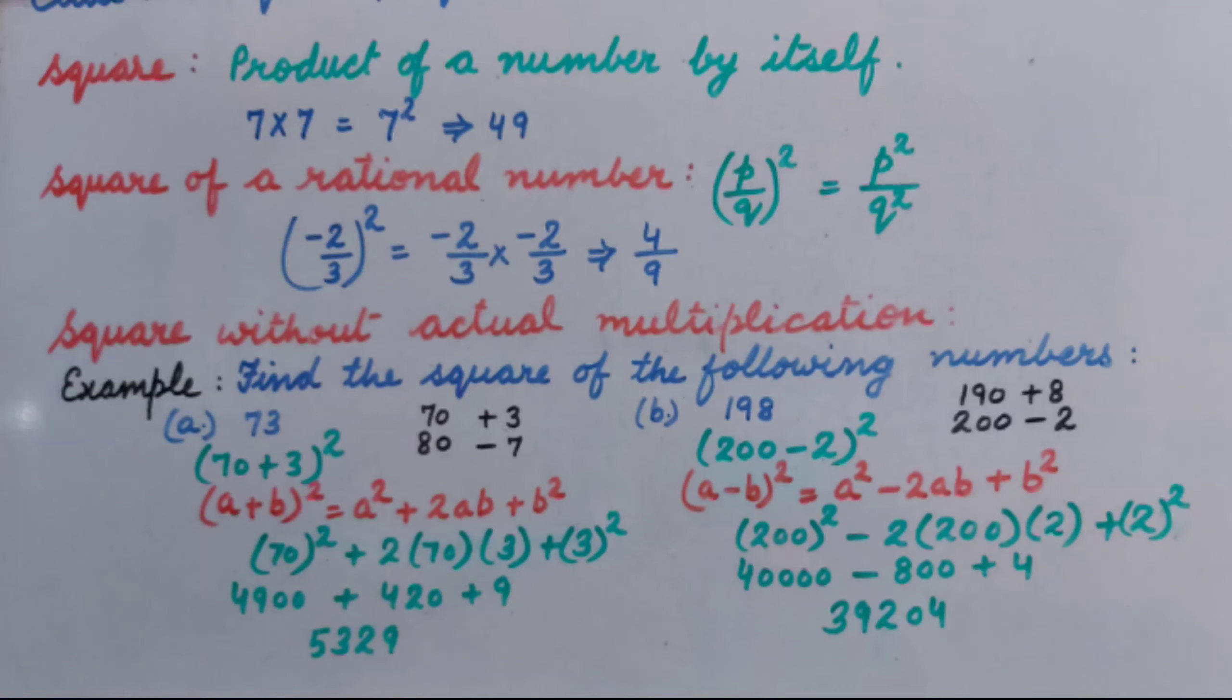Like, 73 lie between 70 and 80. So, 73 can be written as 70 plus 3 or 80 minus 7. 70 is the nearest zero ending number to 73, so we can take 70 plus 3.